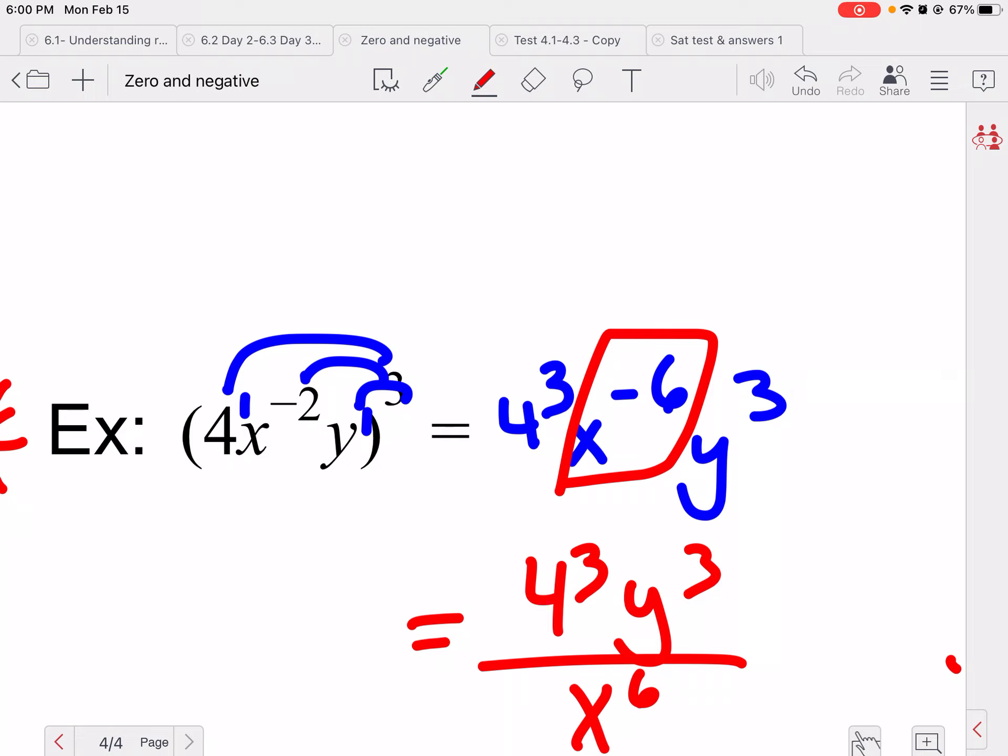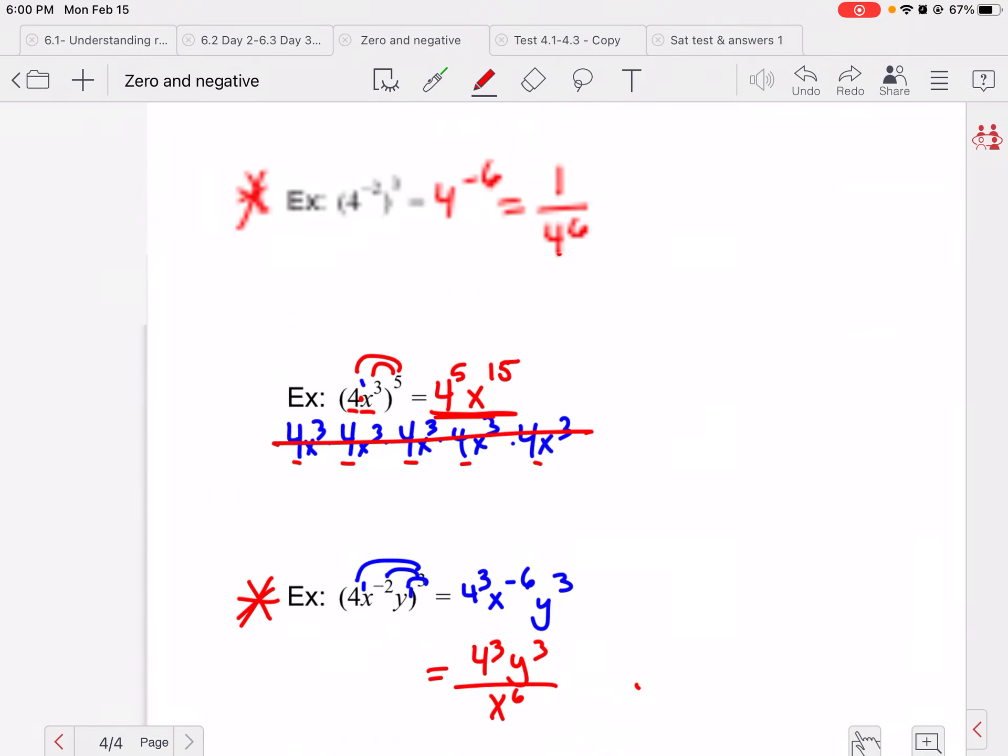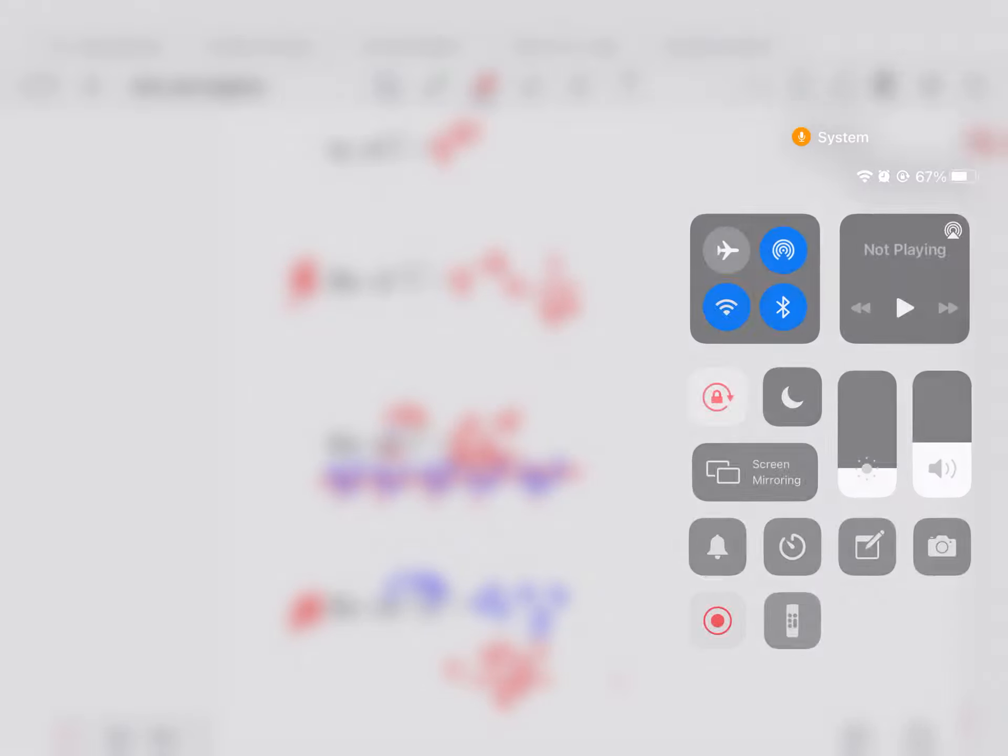So again, only thing that has a negative exponent is that six. So that's the only thing that moves down. We don't move the four to the three, we don't move the y to the three, because those both have positive exponents.